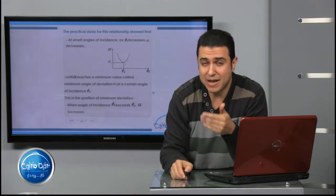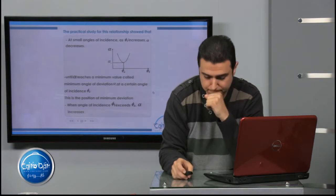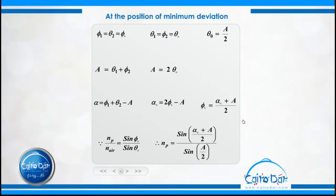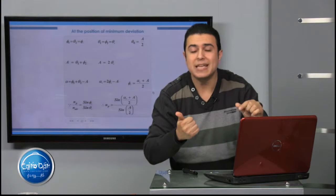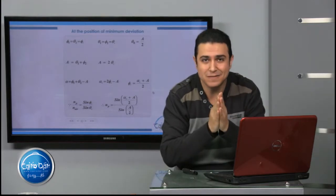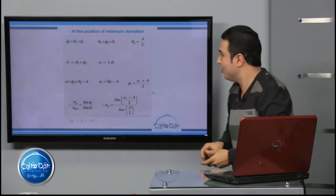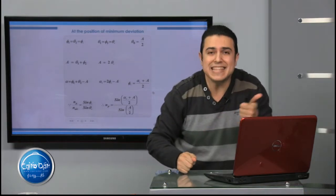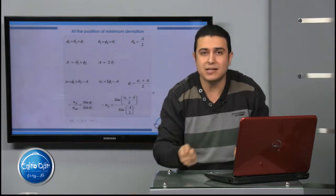Based on this graph, at the position of minimum deviation, a very important relationship holds: φ₁ = θ₂ = φ₀, and also θ₁ = φ₂ = θ₀. Please don't forget this — it is very important.